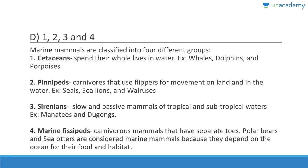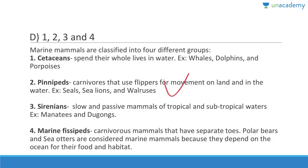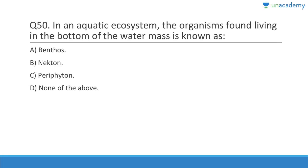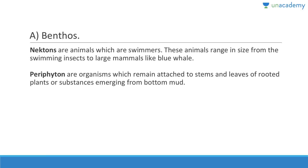Question 49: Which of the following are examples of marine mammals — polar bear, dolphins, whales, walrus? Answer is D, 1, 2, 3, and 4. Cetaceans spend their whole lives in water — includes whales, dolphins, porpoises. Pinnipeds use flippers for movement on land — includes seals, sea lions, walruses. Sirenians include dugong (sea cow). Polar bears and sea otters are considered marine mammals because they depend on the ocean for their food and habitat.